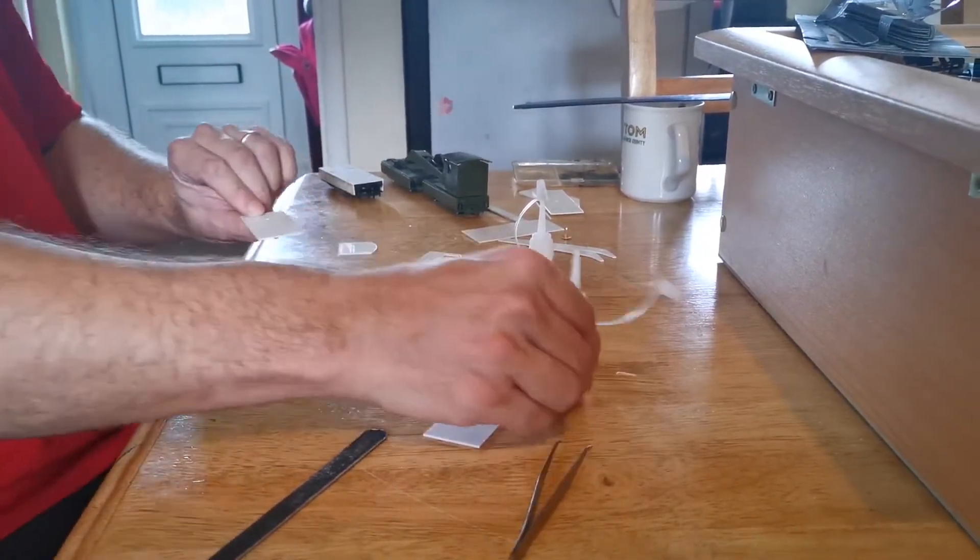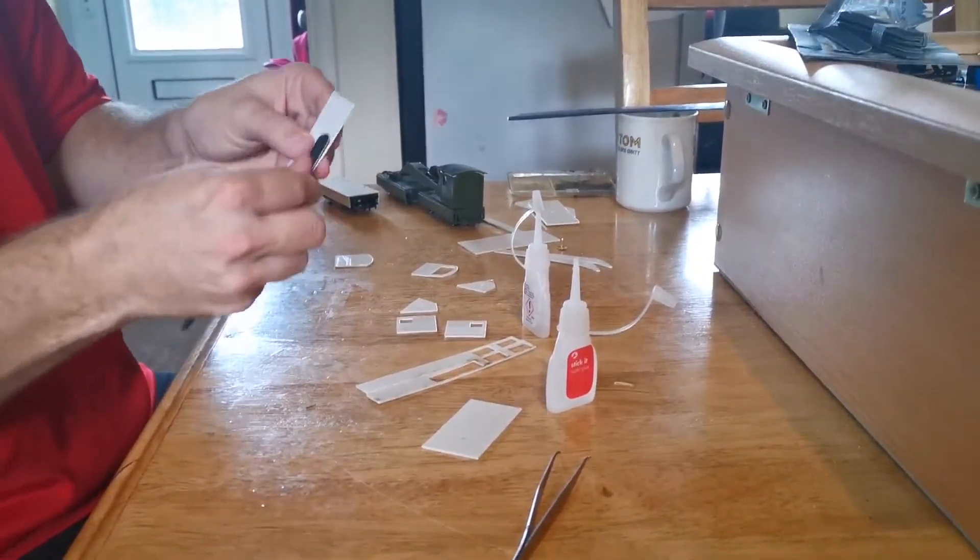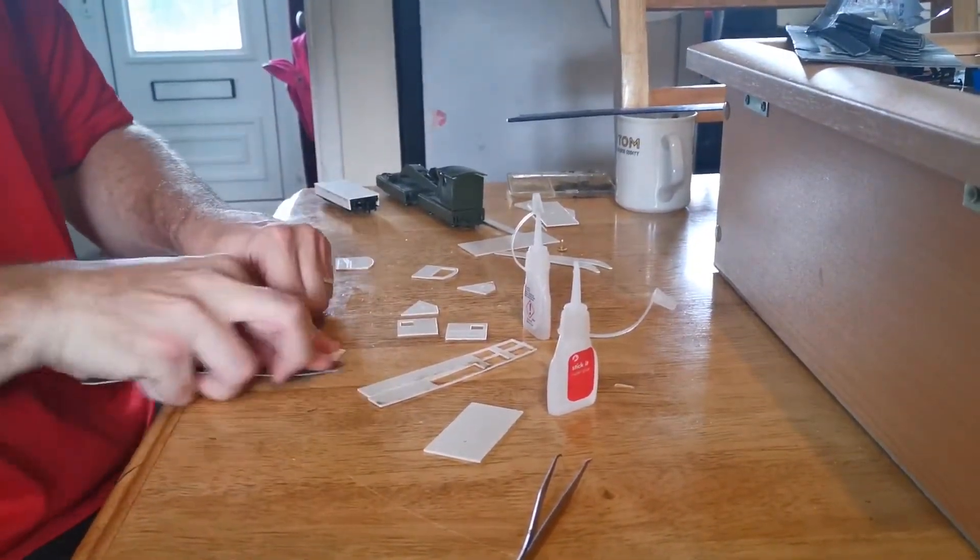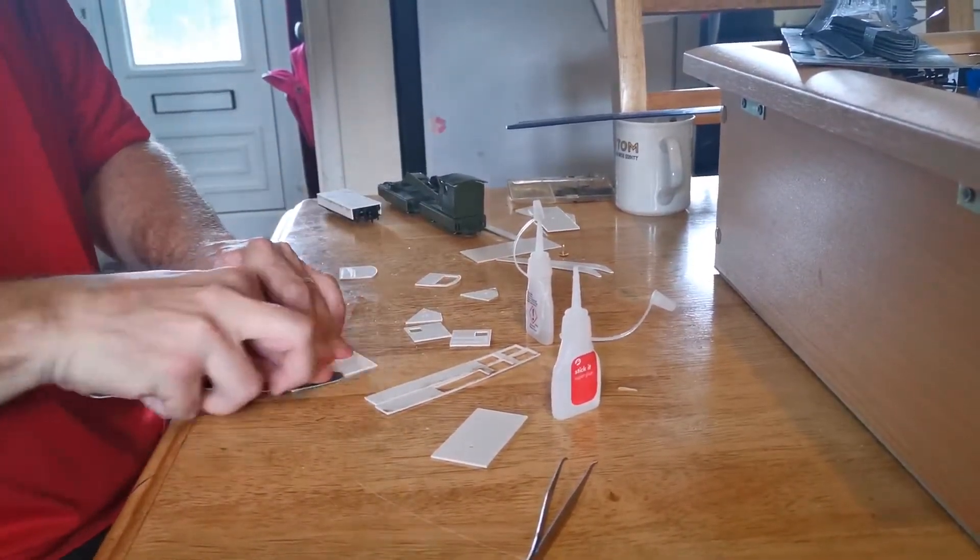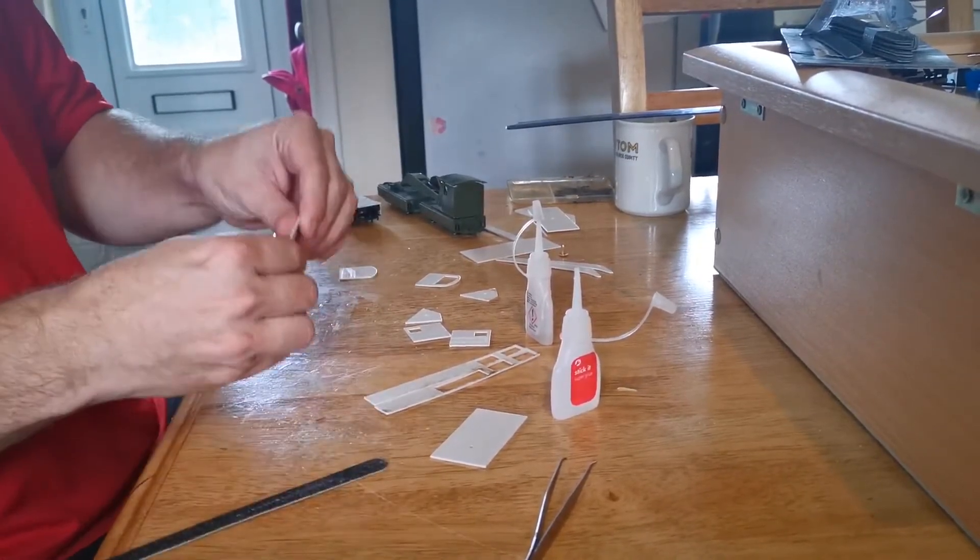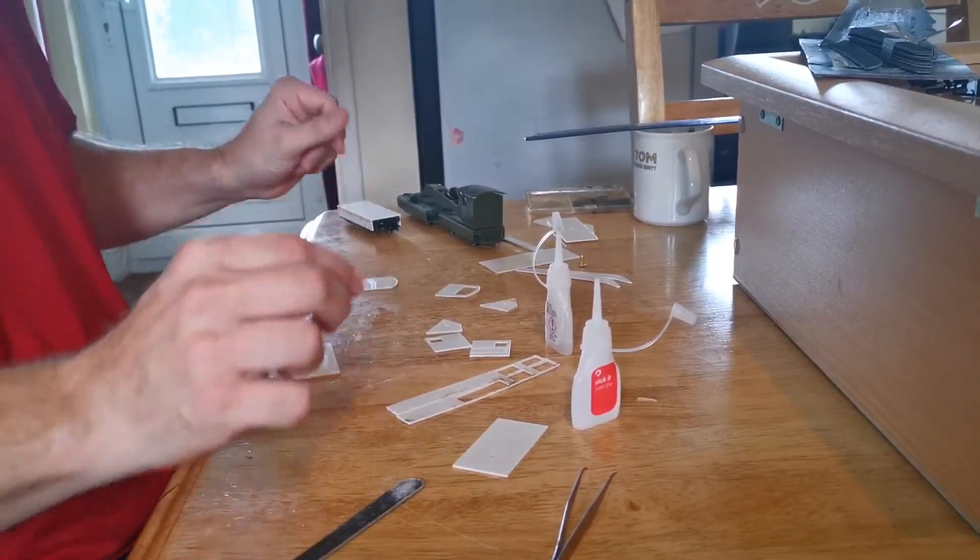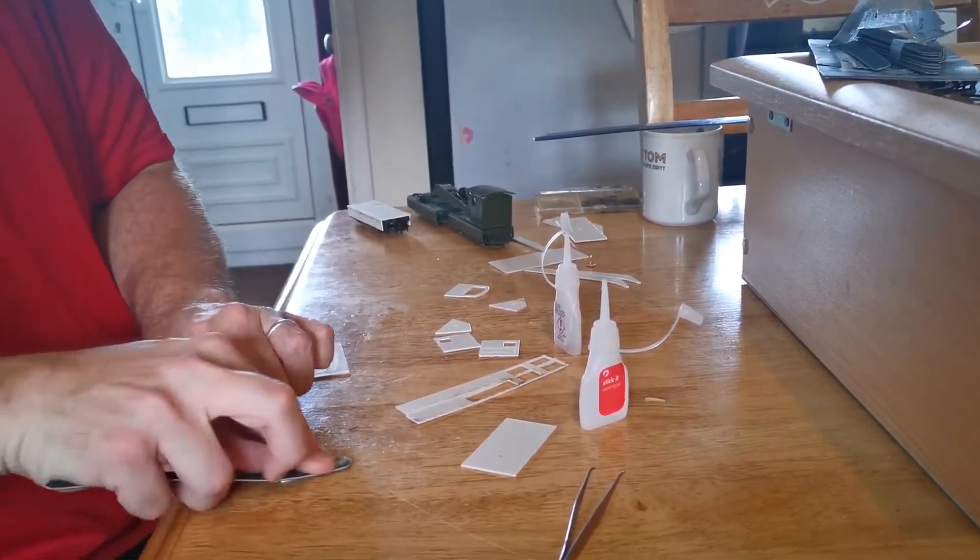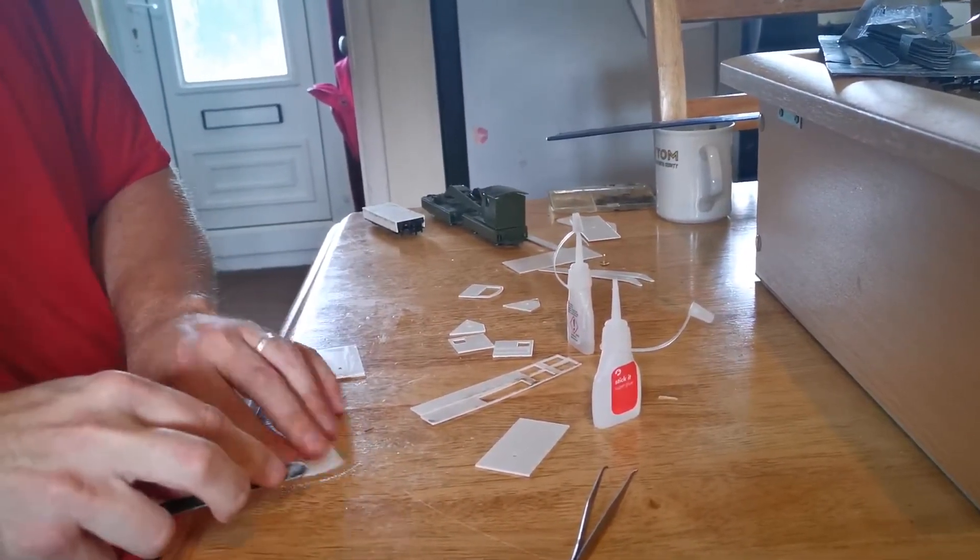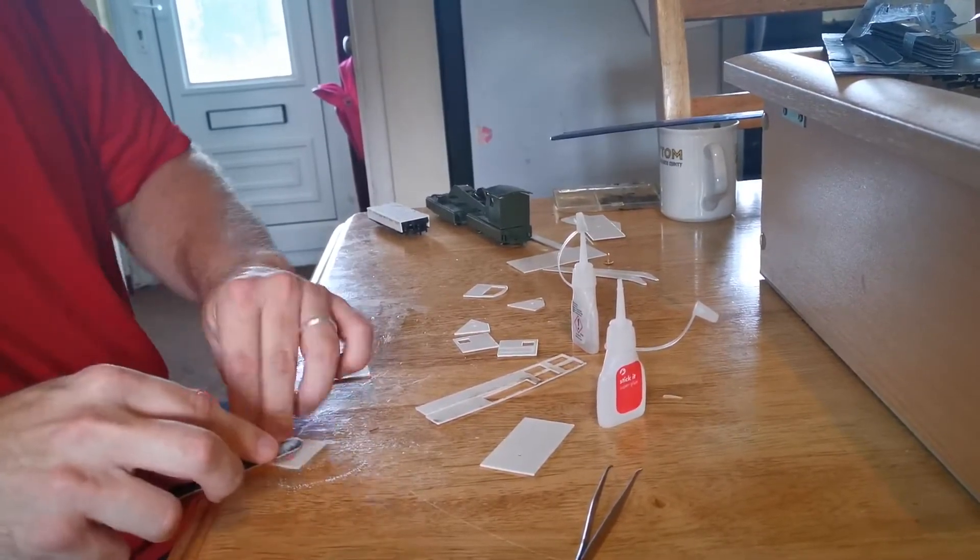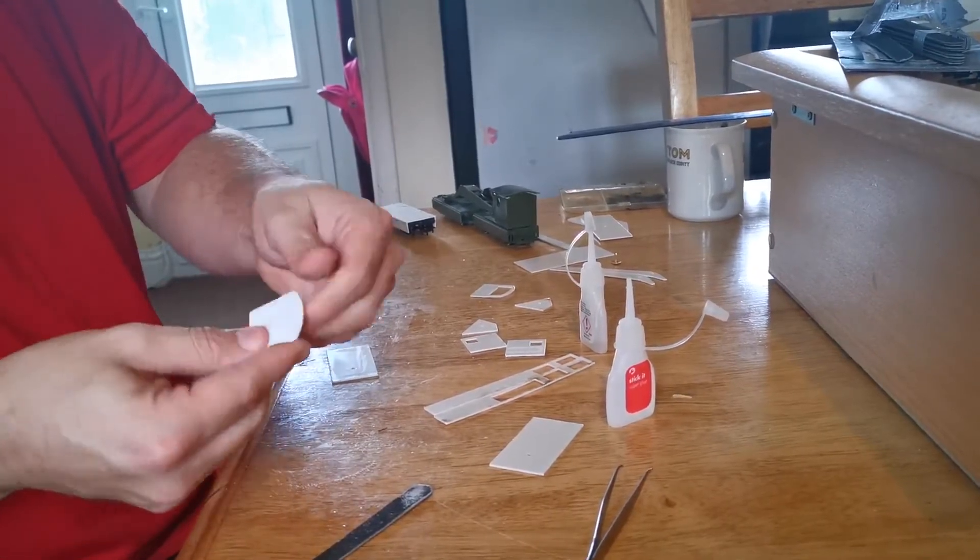Again this is laser-cut plastic card, one millimeter plastic card, and there is a bit of deburring to do. Just take it off with an emery board nail file, get it from your local pound shop. Obviously do this to make sure we've got a nice smooth base to build from. What I'll start with, this is the back of the cab. Again all laser-cut components so it should be quite accurate.